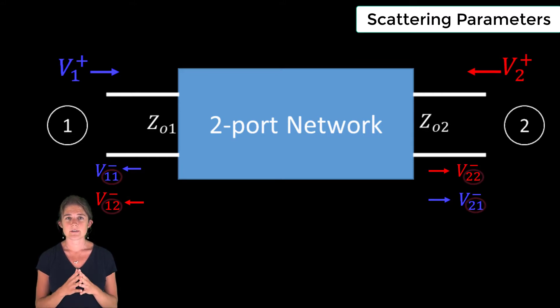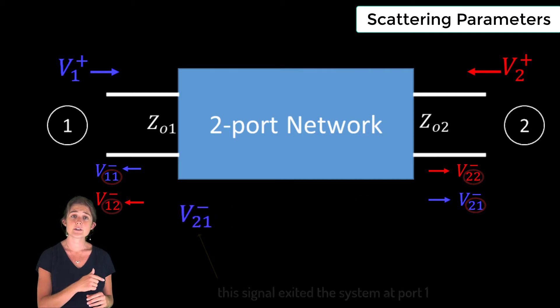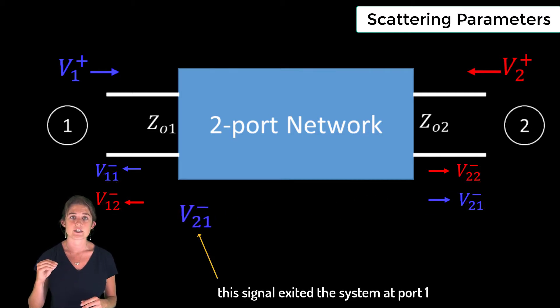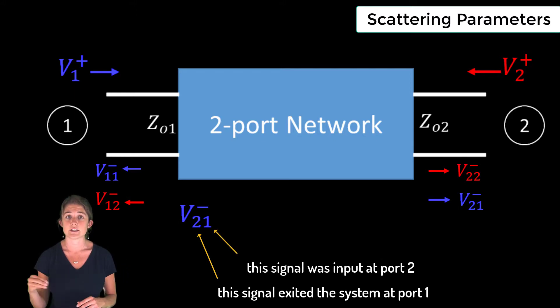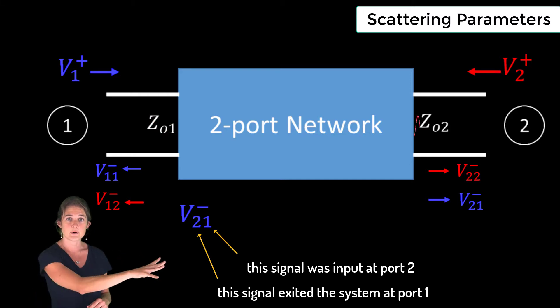Note also that I've added an extra subscript to the output voltages here. The first subscript indicates the port at which the energy exits the system, and the second subscript indicates the port at which the energy entered the system. So for example, V21 is a voltage signal that entered the system at port one and exited at port two.